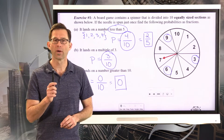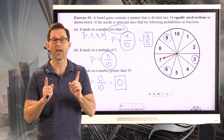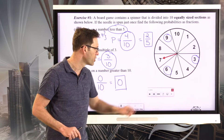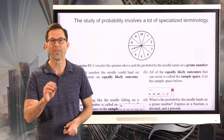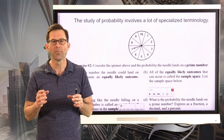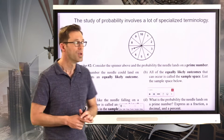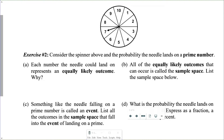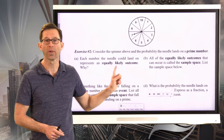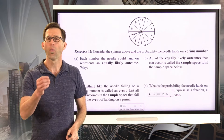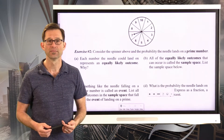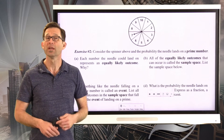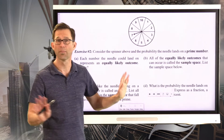Now let's learn some more important terminology, continuing with exercise number two. Each number the needle could land on represents an equally likely outcome. The reason is simple: all of the sections are the same size. Imagine a spinner where section 1 takes up half the space and the other nine sections share the other half — then the outcomes would not be equally likely. But here, all sections are the same size, so all outcomes are equally likely.